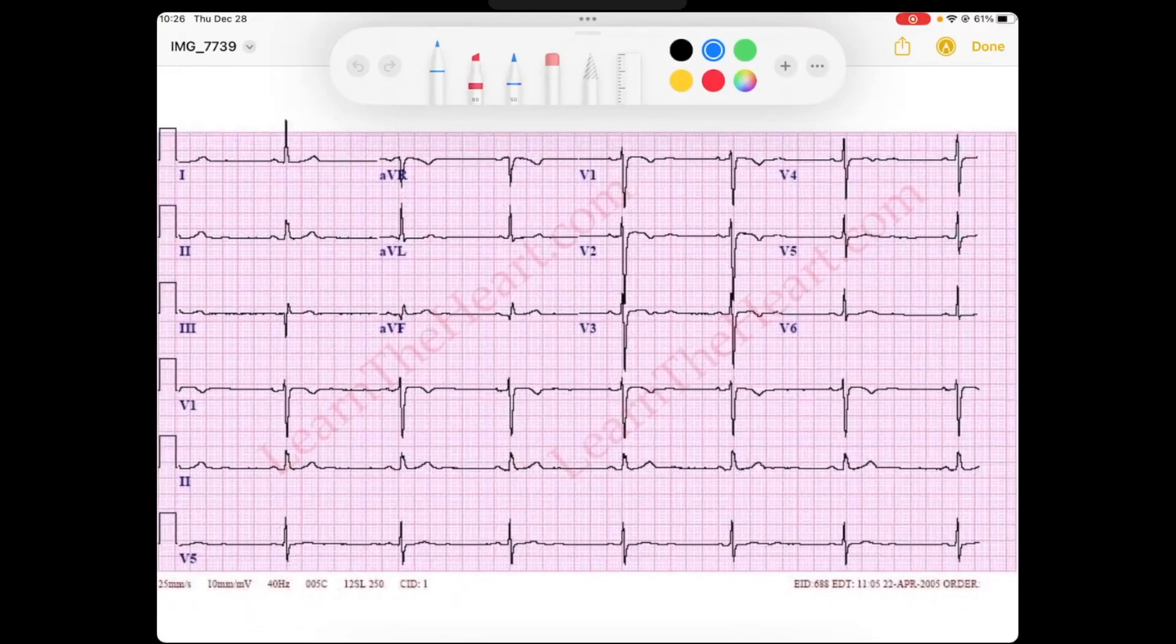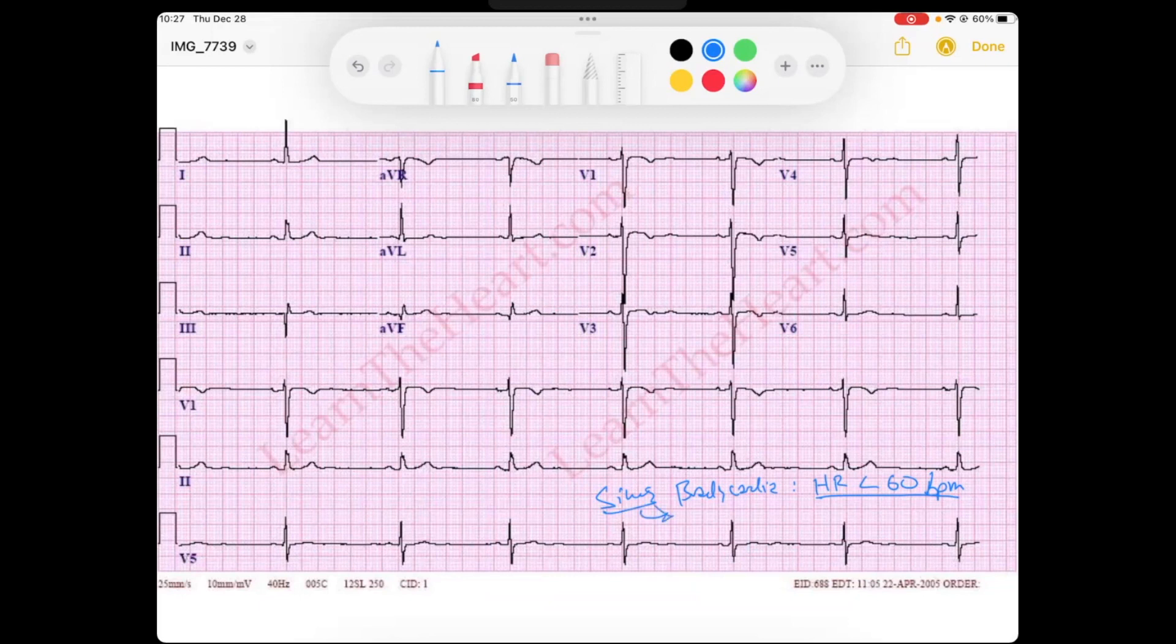All right, everybody. Welcome back. We're going to go for sinus bradycardia today. We know that bradycardia is defined as a heart rate less than 60 beats per minute. So bradycardia is a slow heart rate. If we say a sinus bradycardia, we're saying that the sinus node is beating at a heart rate that is less than 60 beats per minute.